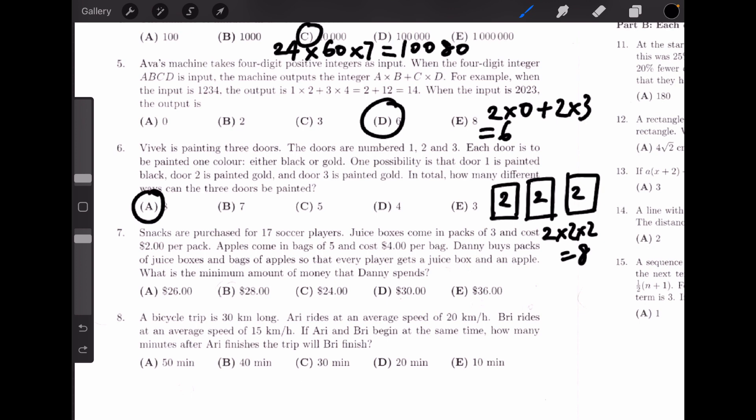Let's first calculate the number of juice boxes needed. 17 divided by 3 gives us 5 with a remainder of 2. Because if we buy 5 packs of juice, there will be 2 players who don't have juice. Therefore, we should buy 6 packs of juice.